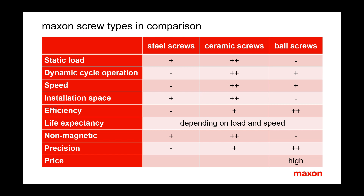Regarding dynamic cycle operation: ball screws have limited dynamic capacity due to the ball return system, and high acceleration leads to slipping balls. Metric spindles of steel heat up too much if operated continuously due to low efficiency. Ceramic spindles, as we know from ceramic gear heads, have excellent gliding properties. On speed: ball screws have limited speed capacity due to the ball return system, while ceramic spindles can be operated at very high input speeds — however, in combination with a gear head, this high input speed is limited.